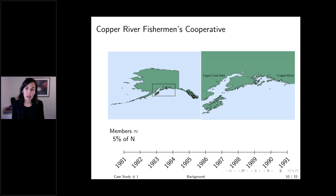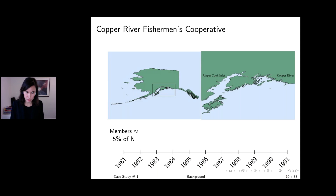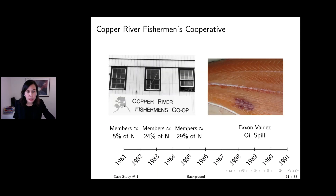They collectively paid to ship their salmon to Anchorage for custom processing and sale into wholesale markets. This turned out to be profitable, so in 1981 they formed a marketing cooperative — a vertically integrated firm where harvesters also control the processing. Their initial membership was 5% of permit holders, and by 1983 they had their own processing plant with 24% membership of the limited entry fishery.